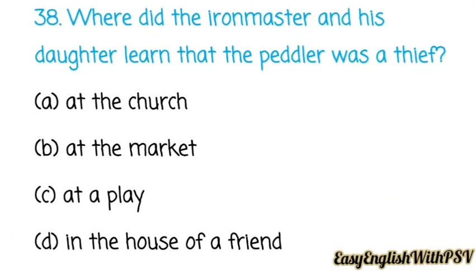Question number thirty-eight: Where did the iron master and his daughter learn that the peddler was a thief — at the church, at the market, at a play, or in the house of a friend? The correct answer is: at the church.